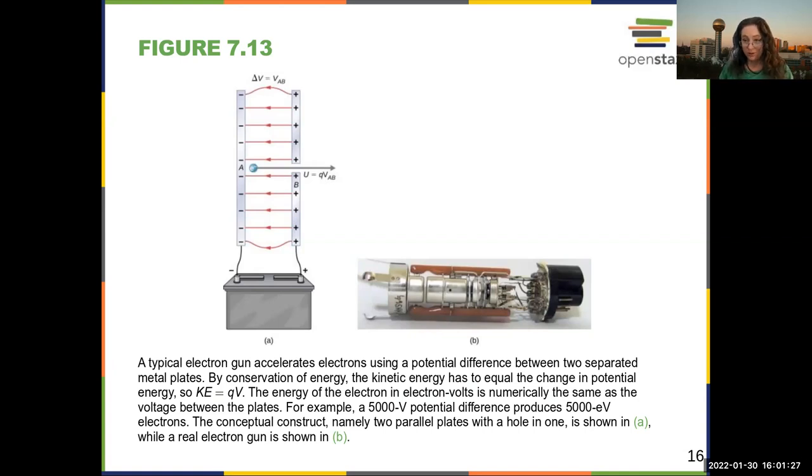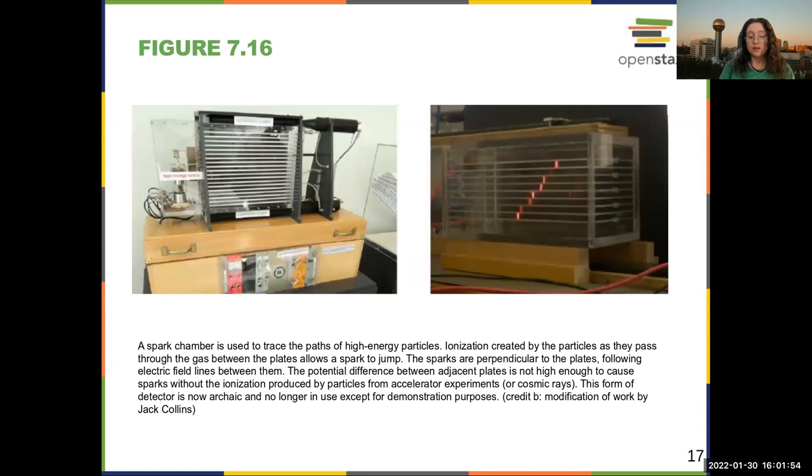You can have an electron gun by having these parallel plates or roughly parallel plates, and then you have a little hole so that electrons can get shot out of them. The hole doesn't change the potential very much, so you can basically still treat it like a constant potential.